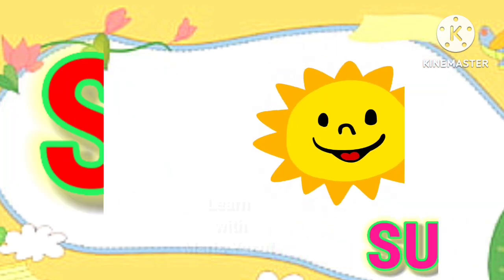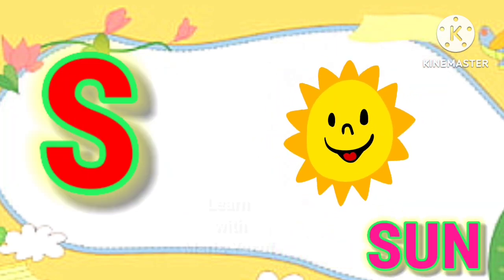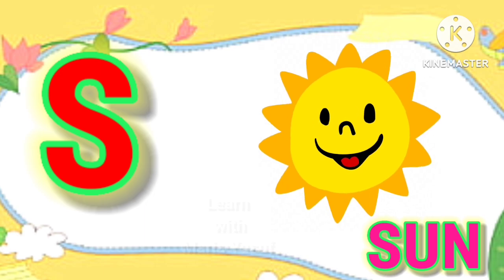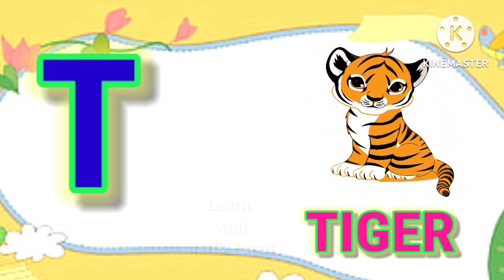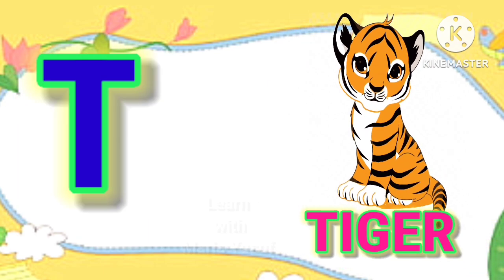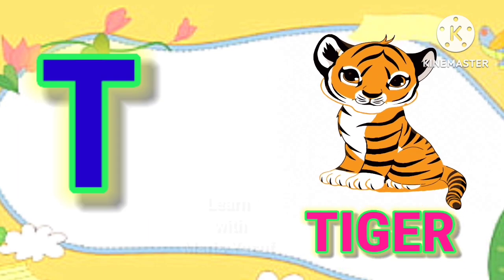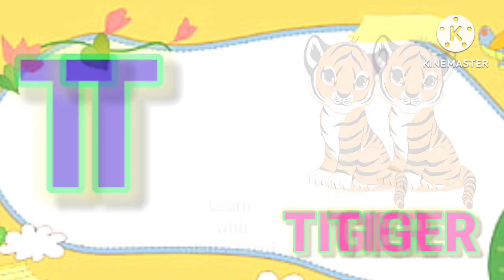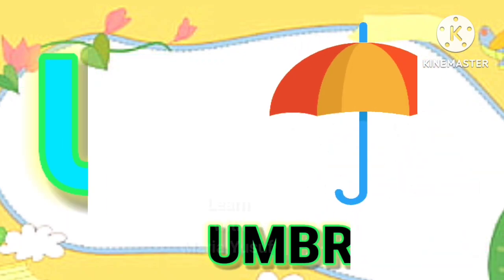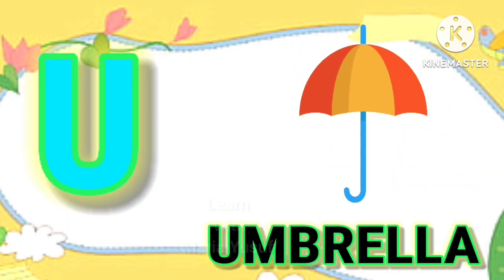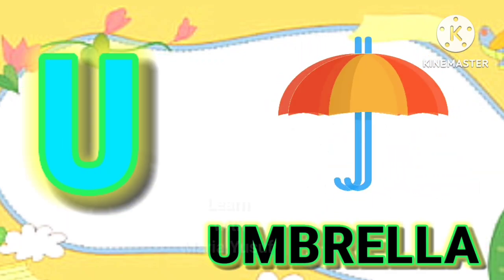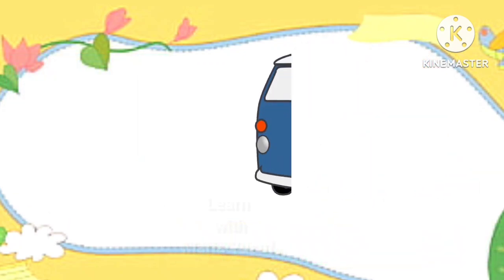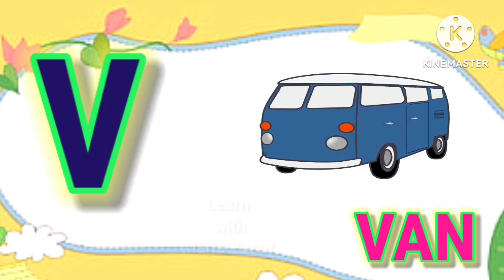S for Sun, T for Tiger, U for Umbrella, V for Van.